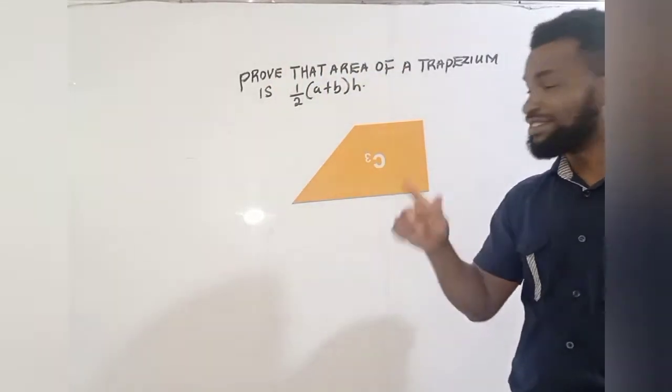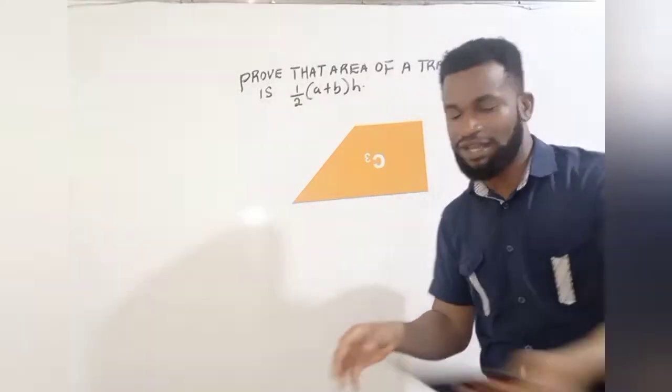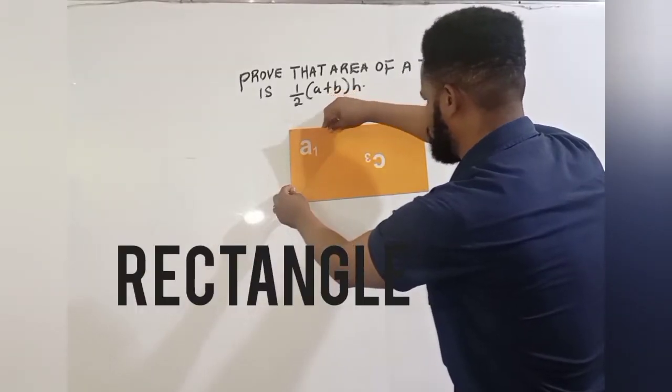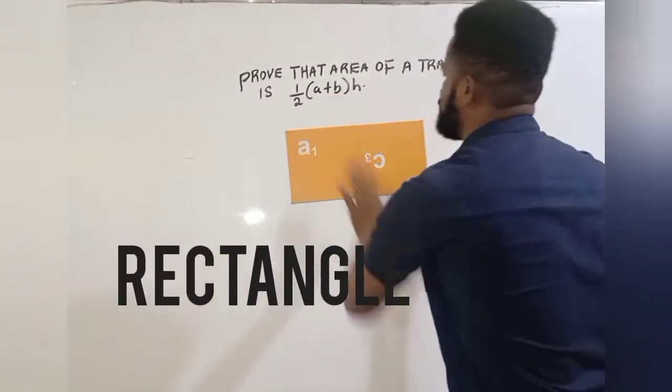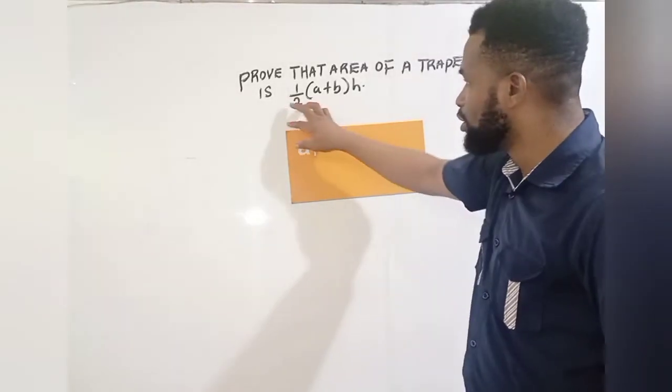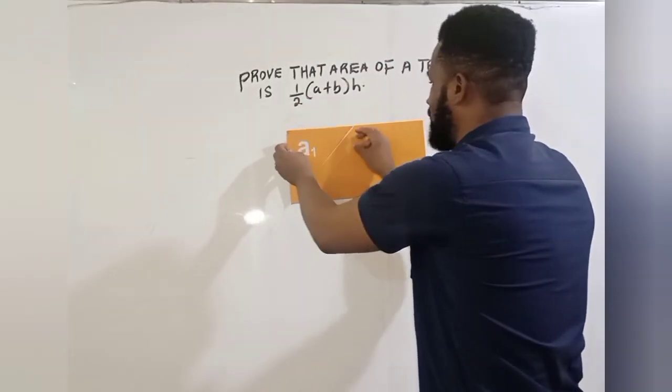You see that this is a trapezoid. I can complete the triangle by just doing this. This is a triangle. Remember, this is half the length of this part.